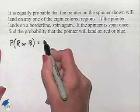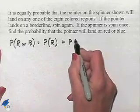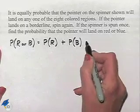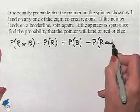We can evaluate that by taking the probability that we land on red, add to it the probability that we land on blue, and then subtract from that the probability that we land on red and blue.